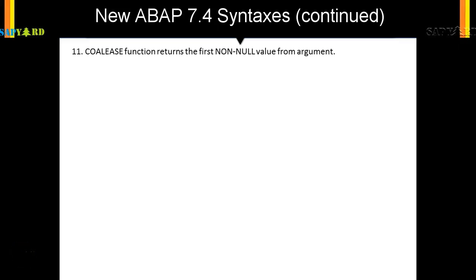The next feature is COALESCE. What does that mean? It means that if field 1 is null, then put field 2. If field 2 is null, then put field 3. If field 3 is null, then put field 4.